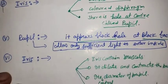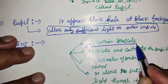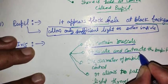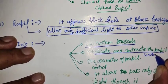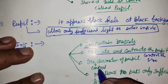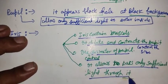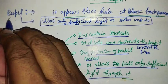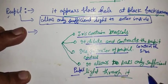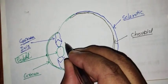The iris property is very important. It contains muscles which dilate and contract the pupil, controlling its diameter. It allows only sufficient light to pass through the pupil. Behind the pupil, from the front, there is the eye lens.